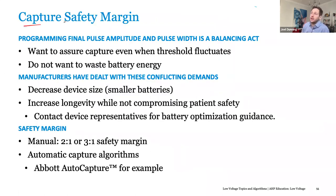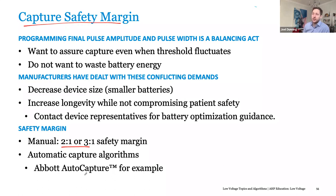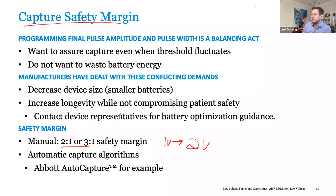That is why we have a nice safety margin. Modern safety margins are around two-to-one or three-to-one, or we use some sort of automatic capture algorithm to assess that. Abbott uses auto capture; essentially the device assesses what capture and non-capture looks like, determines the threshold, and then gives it a nice margin over the top. If you're not able to do that, then we simply say the threshold is one volt and set the output at two volts — a two-to-one margin. We're trying to extend the longevity of the device without compromising patient safety.